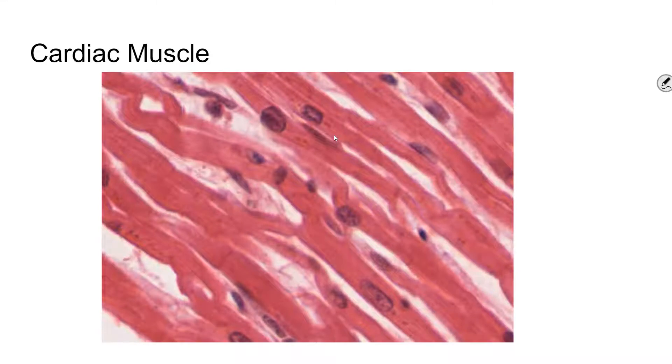Cardiac muscles next. Cardiac muscle tissue is only found in the heart, hence the word cardiac. It makes up the bulk of heart walls. It is also striated muscle.